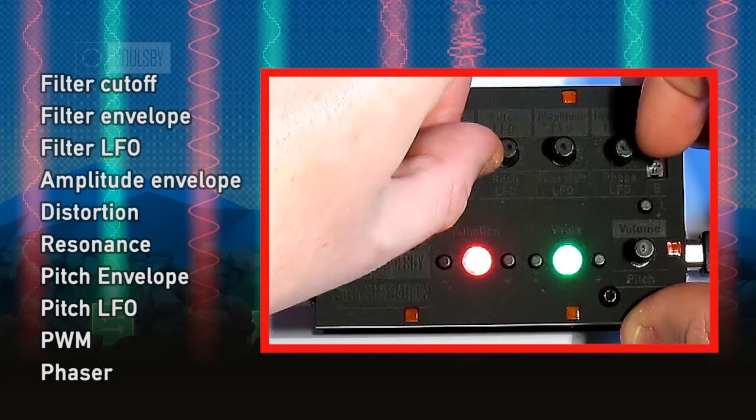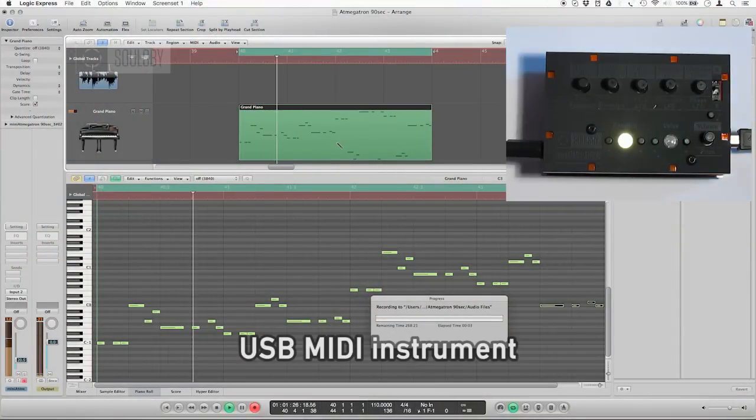The Mini App Megatron can be used as a MIDI instrument by connecting the USB lead to a PC or Mac.